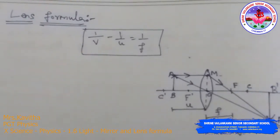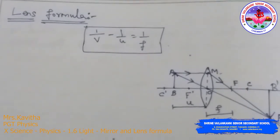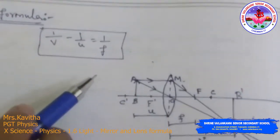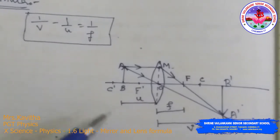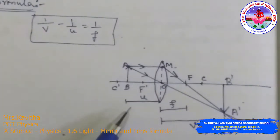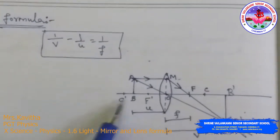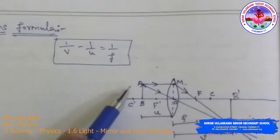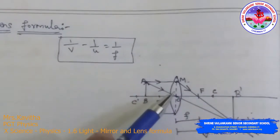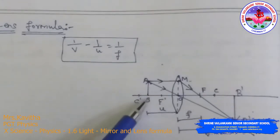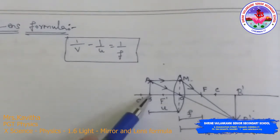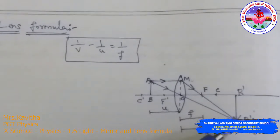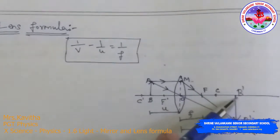Now the lens formula. The lens formula is 1/V − 1/U = 1/F. Here we see the lens formula for a convex lens when it forms a real image. Consider an object AB placed perpendicular to the principal axis of a thin convex lens between F' and C'. A real, inverted, and magnified image A'B' is formed beyond C on the other side of the lens.